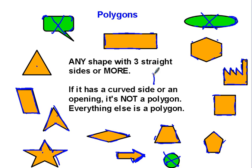If you see a shape that looks like this, that's not a polygon because it's got a curved side on it. You see a shape that looks like that, that's not a polygon because it has an opening right there. And that's polygons.